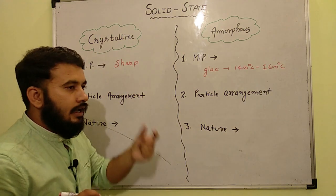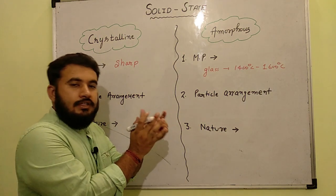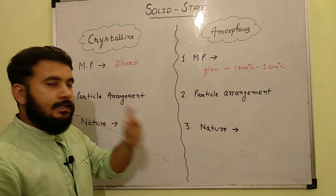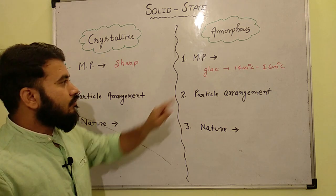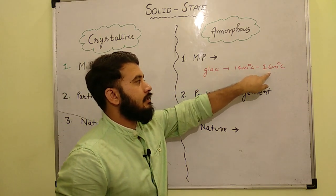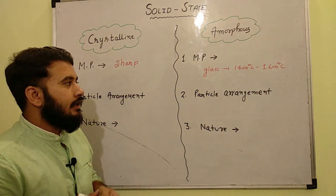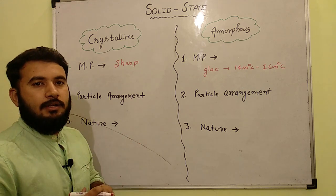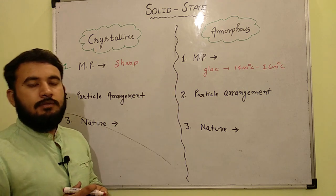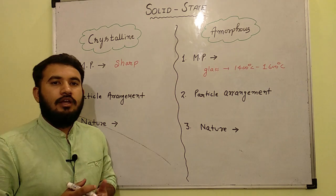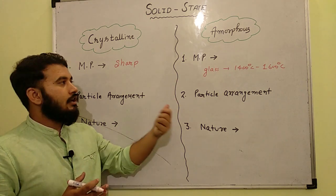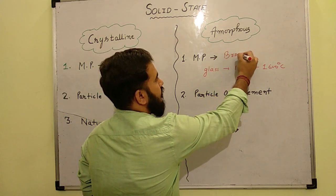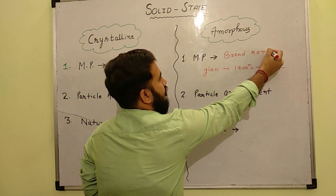So glass basically melting point is around 1400 degree celsius to 1600 degree celsius. It means that the glass will depend on which temperature it will melt, because glass has many varieties. So from 1400 to 1600 is the basic range. It means that it doesn't have a sharp point, but it has a broad range. So this is amorphous solid property that the melting point is not sharp, but it has a broad range. So for amorphous solid we have a broad range of melting point.